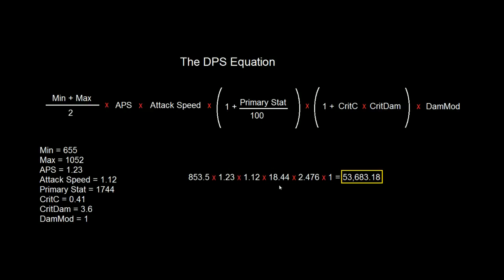And then my Primary Stat divided by 100 gives me 17.44, so I add 1 to that, 18.44, and here we have my Crit Chance times my Crit Damage. These two multiplied gives me 1.476, I add 1 to it, multiply it in, and finally I don't have any Damage Mods, so just times 1, and this is the number that comes out. It's perfectly accurate, and therefore this spreadsheet will give you exact answers when you're looking for making simulations on your gear.